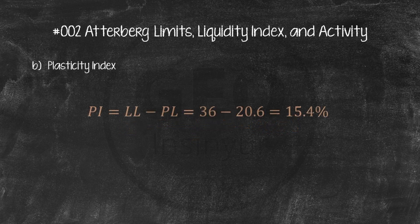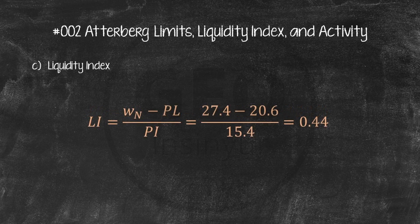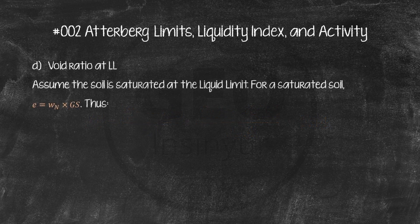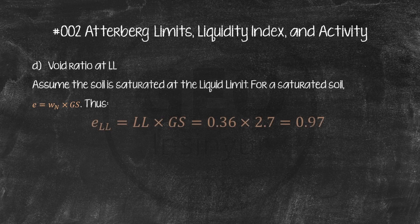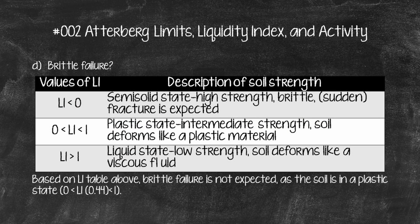The Plasticity Index is 15.4%. The Liquidity Index is 0.44. For the void ratio at LL: assuming the soil is saturated at the liquid limit, void ratio = natural water content × Gs, giving a void ratio of 0.97. Regarding brittle failure: based on the LI table, brittle failure is not expected, as the soil is in a plastic state.